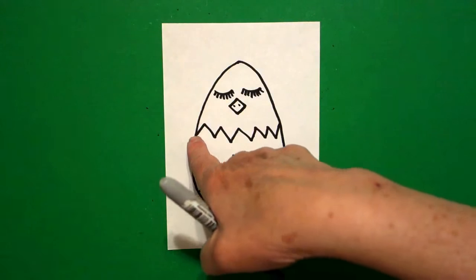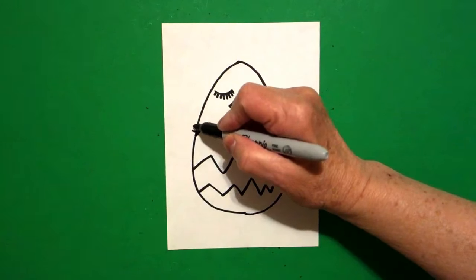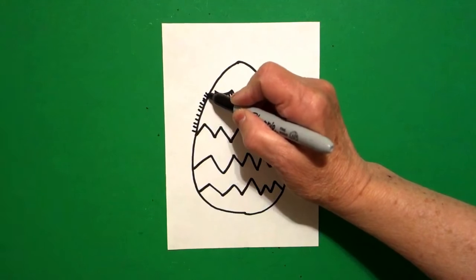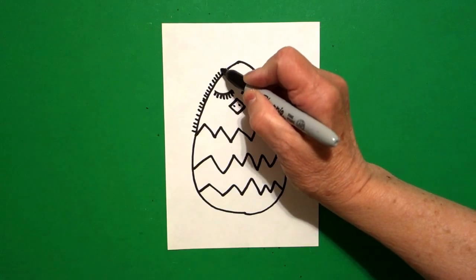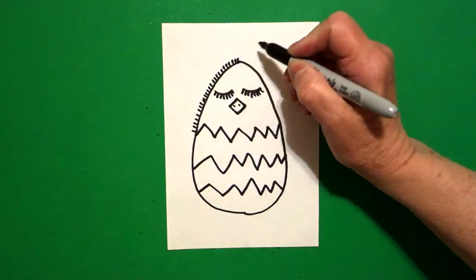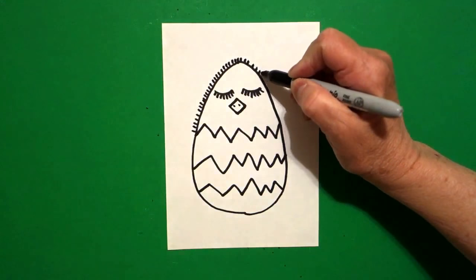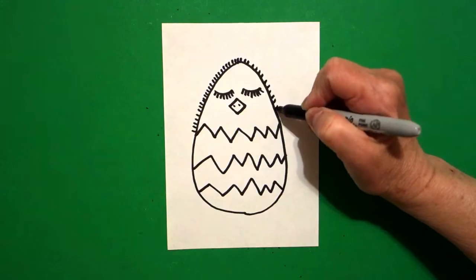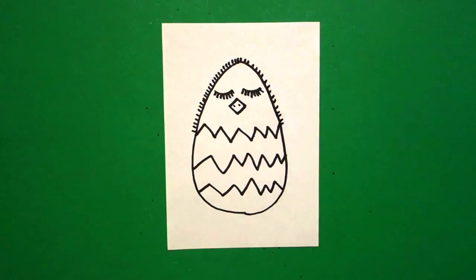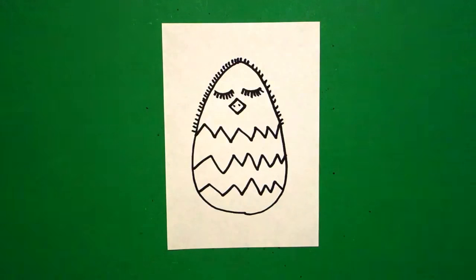Now, starting on the left right here, I'm going to put little straight lines all the way across the top and the left and right side of that section. All right, let's see how we're going to color this in.